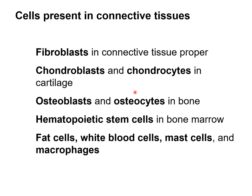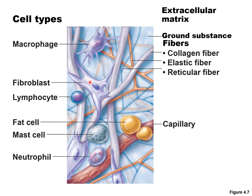We also have hematopoietic stem cells — hematopoietic means blood forming — and they are found in bone marrow. Other cells seen in connective tissue are fat cells, which are adipose cells, and the rest are types of blood cells that help fight infection. Here we have a fibroblast secreting collagen fibers and elastic fibers shown in orange. There's a lymphocyte, which is a type of white blood cell to fight infection, along with a macrophage and a fat cell. Connective tissue is vascular, so you'll see blood vessels like this capillary. This is just a good picture of what connective tissue might look like.